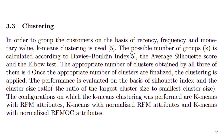The next step is clustering, used to perform customer segmentation. The algorithm used is k-means, where k indicates the number of clusters. To determine the optimal number of clusters, several tests were carried out, all of which suggested k equals 4 as a good fit. Once the number of clusters was identified, clustering was applied and performance was evaluated using silhouette index and clustering ratio. Configurations tested included k-means with RFM attributes, k-means with normalized RFM attributes, and k-means with normalized RFM OC attributes.